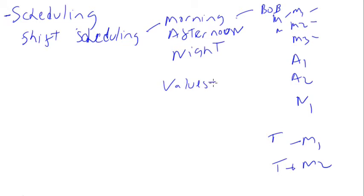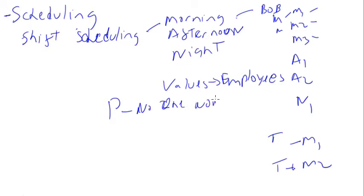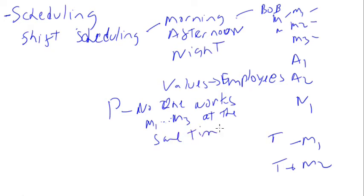In shift scheduling, the shifts are the variables, the values are the employees, and the constraints are whatever requirements you have. For example, no one works two shifts — you don't want the same person assigned to both m1 and m2 at the same time, because that doesn't make sense. You might also prohibit consecutive shifts and similar conditions.